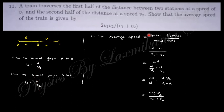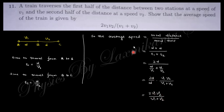The average speed is total distance divided by total time. Total distance is d plus d, and total time is t1 plus t2, that is d/v1 plus d/v2. Taking 2d and factoring out d, we get 1/v1 plus 1/v2, which is (v1+v2)/(v1·v2). Inverting gives v1·v2/(v1+v2), so the average speed becomes 2v1v2/(v1+v2).